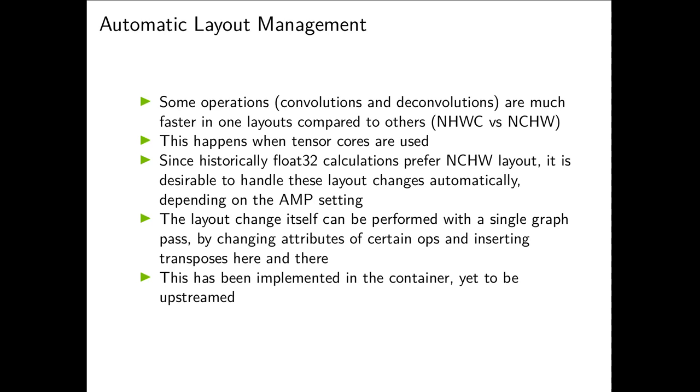And we want to make AMP even faster. One such possibility is automatic layout management. Some background: some operations, convolutions and deconvolutions, are much faster in NHWC layout compared to NCHW when they are executed on tensor cores. But since historically FP32 calculations prefer NCHW layout, it is desirable to handle those layout changes automatically depending on the AMP setting. It turns out that the layout change itself can be performed with a single graph pass by changing attributes of certain ops and inserting transposers here and there. In fact, we already implemented this thing in our contrib, but we are yet to upstream it.